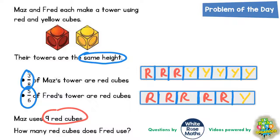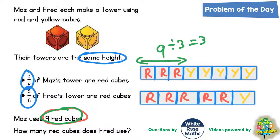Now here comes the final clue. Maz uses 9 red cubes. So what this is saying is that these three sections must in total be worth 9. It doesn't mean they're worth 9 each - it means the three sections together must be worth 9. Which means each of the sections is 9 split into 3. Nine divided by three is 3. Each eighth of Maz's tower is worth 3 cubes.